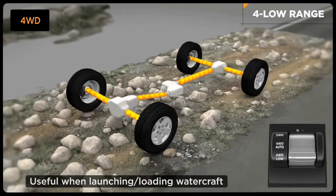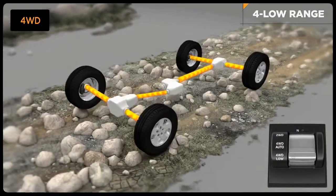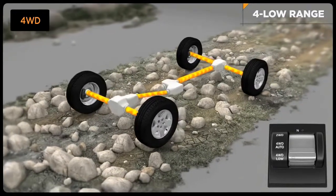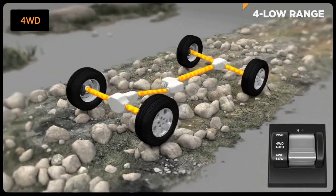To engage the low range, slow down to 2 to 3 miles per hour and put the transmission in neutral. While still rolling forward, move the shift lever into the 4-Low position. Then return the transmission to the desired gear. Reverse the process to shift into four-wheel drive auto.